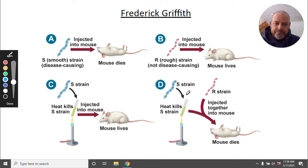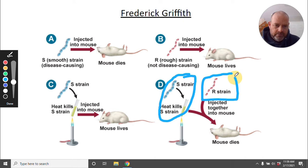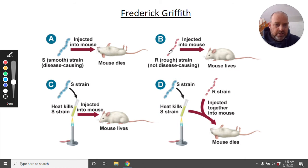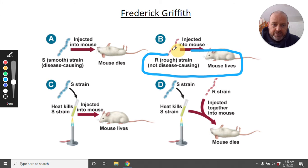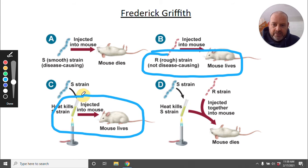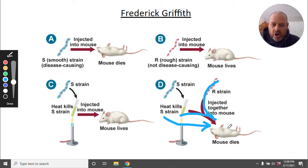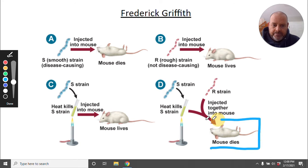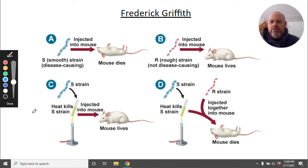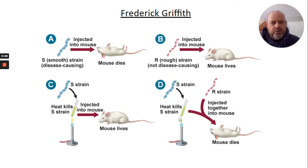Then they took the heated S strain and an R strain — neither of which should kill the mouse. An R strain alone: mouse lives. A heated S strain alone: mouse lives. But if you put them together — the dead S into the mouse and the R into the mouse — the mouse dies. So what's going on? You had two scenarios which typically do not kill the mouse, but together they kill it.